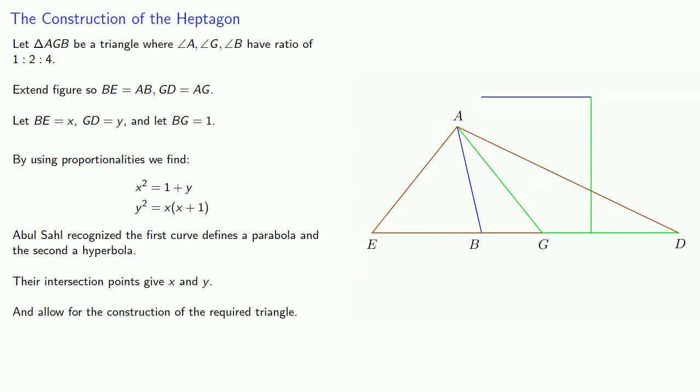Now, the three vertices of the triangle are actually points on a circle. So if we draw that circle, this side BG is actually one side of a regular heptagon inscribed in the circle. And so what we have is what may be one of the most remarkable geometric constructions ever made.